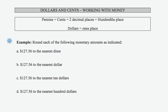In this example, we're going to be rounding the same number to different money amounts. So we're rounding $127.56 first to the nearest dime. So what I'm going to do is go ahead and write the number again here, 127.56.